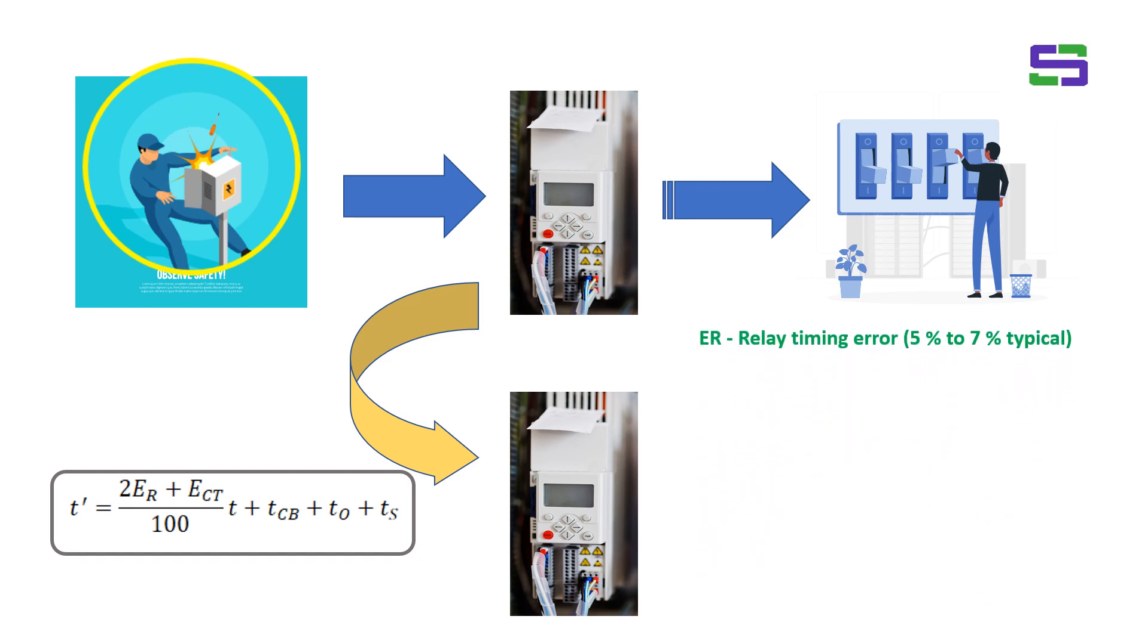In this equation, ER is the relay timing error, which is typically 5 to 7 percent or 7.5 percent. And next is coming ECT. ECT is the CT ratio error, which is typically 5 percent to 10 percent. T is the operating time of downstream relay.